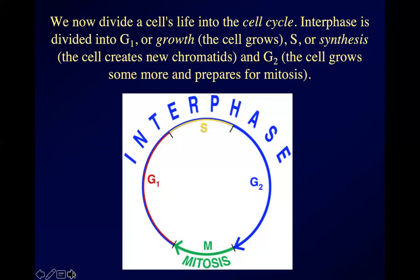In the G1 phase, the cell just grows and does its thing. In the S phase — S standing for synthesis — the cell creates new chromatids on each of its chromosomes. And then after that, in a stage called G2, the cell might grow some more and gets ready for mitosis to take place.